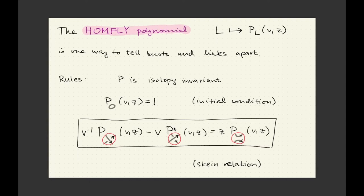It's a two-variable polynomial — actually a so-called Laurent polynomial, so negative exponents are okay — and it's based on some really simple rules. This is supposed to be invariant under the deformations. To the most trivial knot, this very simple little curve, you assign the value of one. And then, if you make certain local modifications to your curves, the polynomial changes in this predictable way governed by the so-called skein relation.